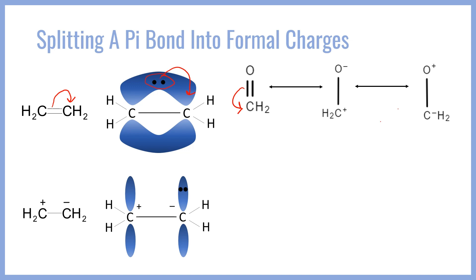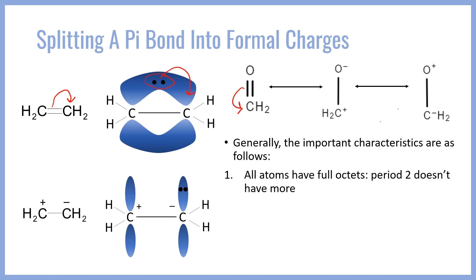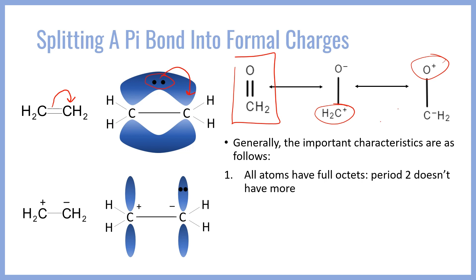Which one of these is a better representation of the molecule? There are a couple of factors. Generally, the most important characteristics for determining the importance of a resonance structure are as follows. The first is that all atoms have a full octet, and specifically period 2 atoms — C, N, O, and F — cannot have more than 8 electrons; larger atoms can expand their valence to include d orbitals, but period 2 cannot. So the number one priority is that the best resonance structure is the one that has all atoms with a full octet — that would be the neutral structure. The other two structures have either carbon or oxygen electron deficient, so they are not strongly contributing to the overall molecule.